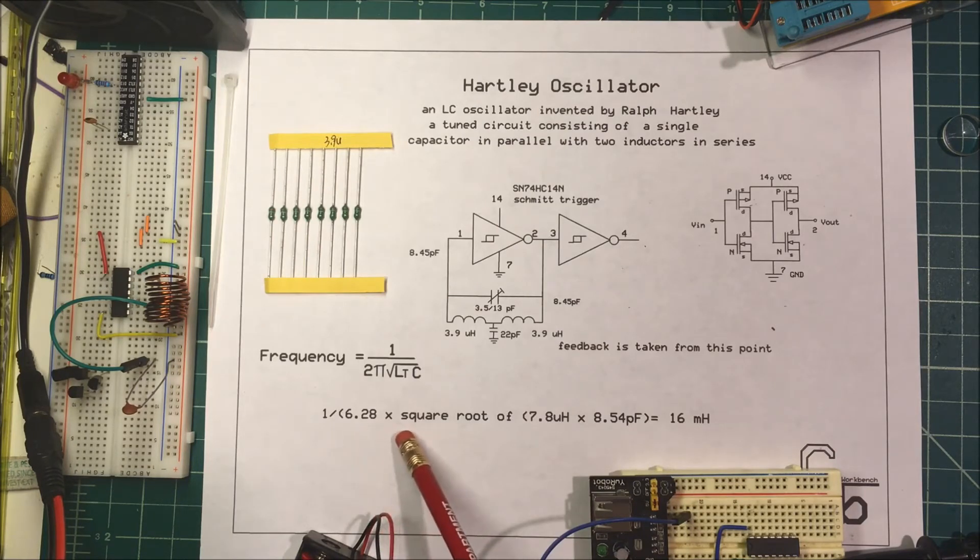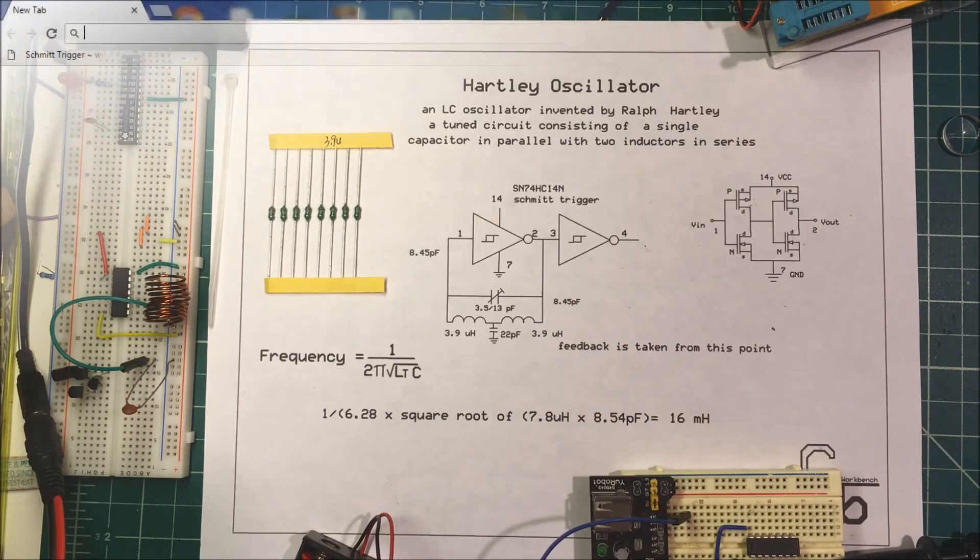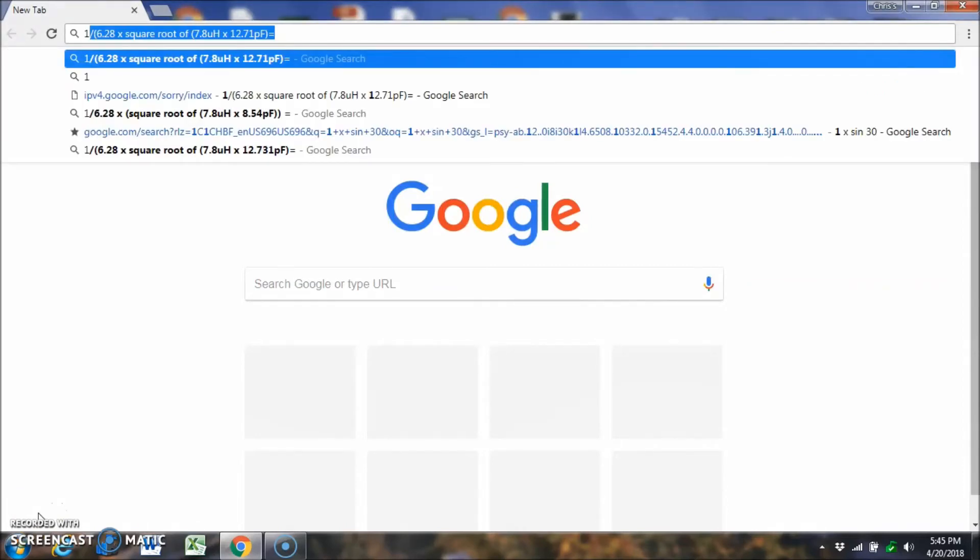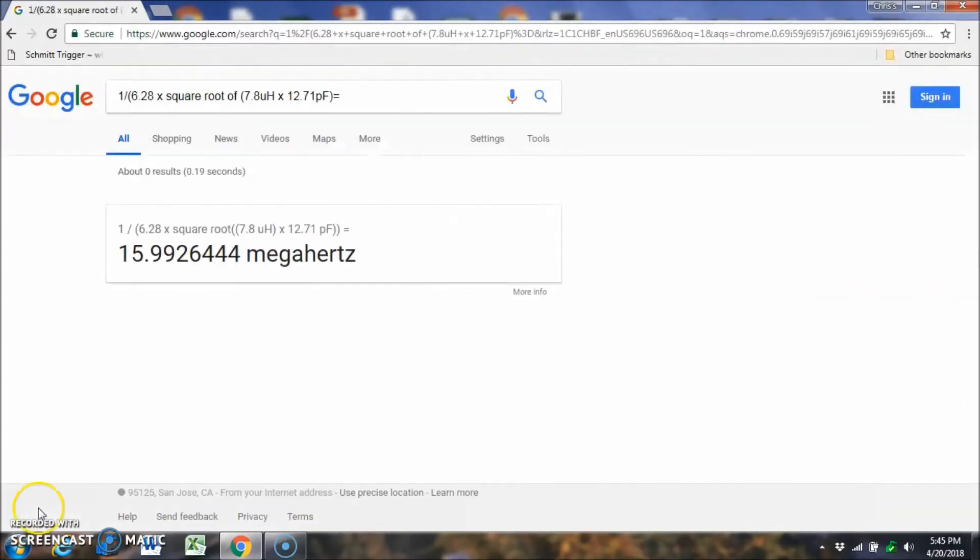And this is what we're going to type into Google and see what comes up. We'll go there right now. Here we are in Google and all you have to do is type in the formula. I already typed it in so it comes up automatically and here it is here. What's nice about this, it takes care of your microhenrys and your picofarads and it gives us a reading in megahertz.